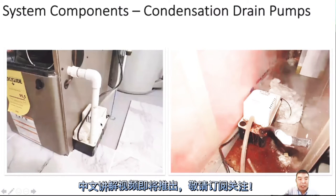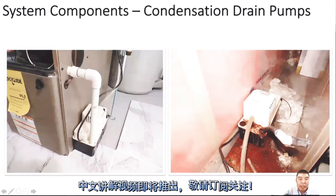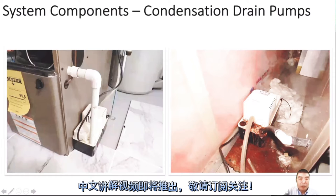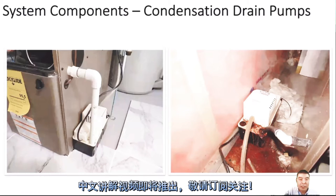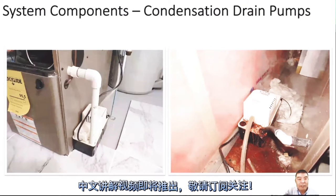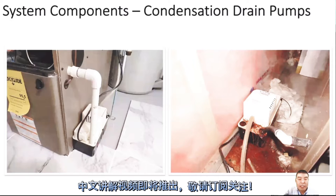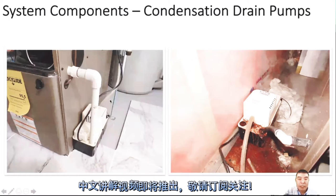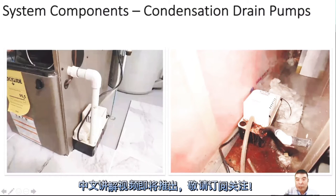This is the condensate drain pump. We normally only use this for the high efficiency furnace when there is no floor drain around the furnace. When we install the high efficiency furnace, the old house maybe never thought about it, so there is no floor drain. So if that's the case, after we install the high efficiency furnace — or even just an A-coil for air conditioning — we still need the condensate pump to pump the water to the closest floor drain or drain system.